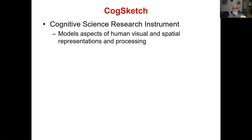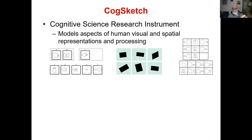CogSketch has two roles. First, it's a cognitive science research instrument — trying to be a model of high-level visual and spatial representations and reasoning. By that I mean things like geometric analogies. The first example on the left is a geometric analogy problem: A is to B as C is to what? You'll probably all come up with the same answer, which is three. And if you download CogSketch, which will run on any Windows machine, you'll find a complete set of geometric analogy problems from work by Tom Evans back in the 1960s.